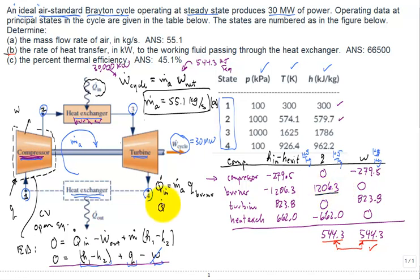So, the Q dot in comes out at 66,500 kilowatts. That's the answer for part B.